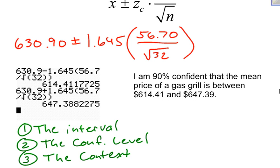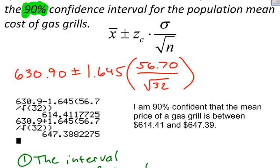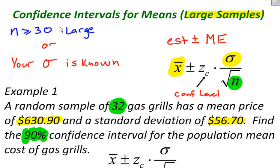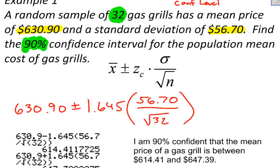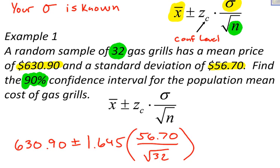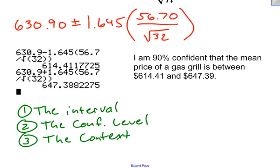So I hope that this example helps you, but keep in mind, this is an example of how to find a confidence interval for means, which is a large sample. If you have a small sample, then your formula is going to be a little bit different. Pretty much everything else will be the same, but your formula will be slightly different. I hope this helps, and keep watching my videos.